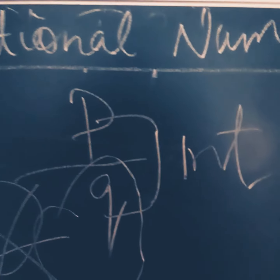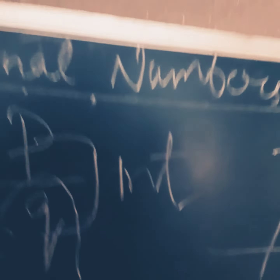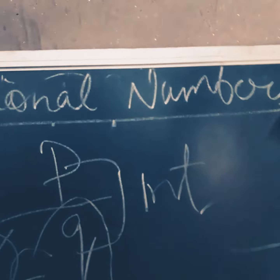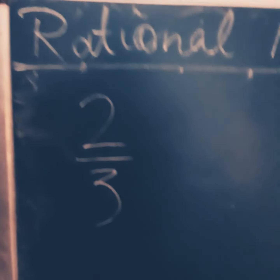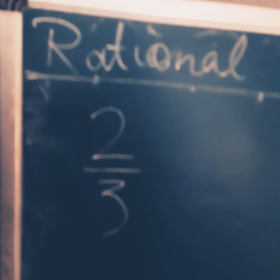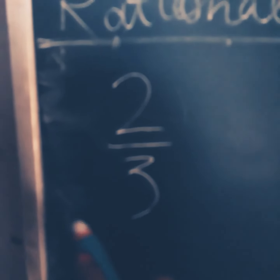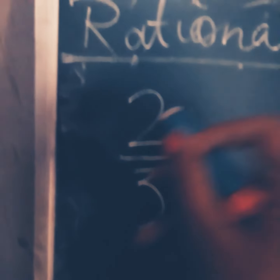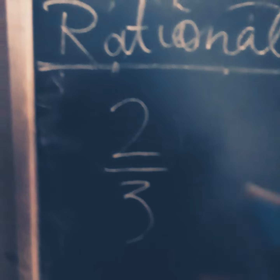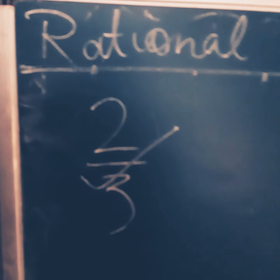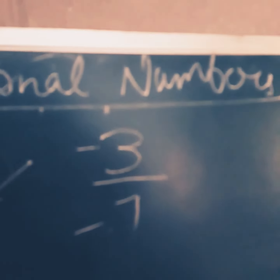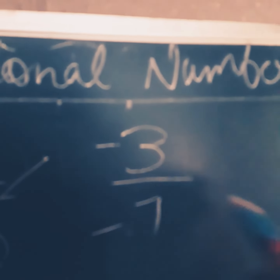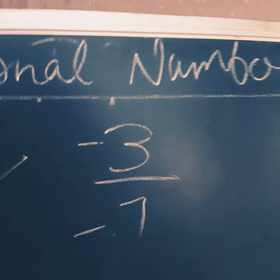Let's start with the exercise on how to identify rational numbers. Can you identify if this is a rational number? Yes, because both are integers, there is no 0 in the denominator, and this is in the dividing form. Is this an integer? Yes, both are integers and there is no 0 in the denominator.